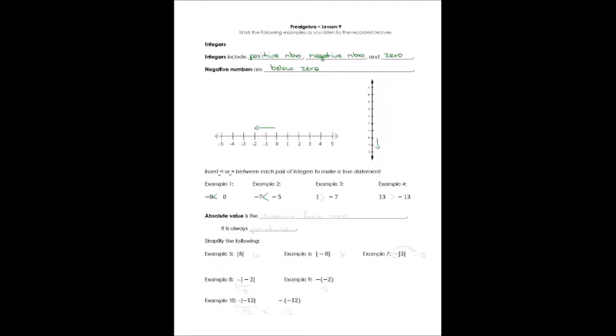Example three says one and negative seven. And of course, any positive number is bigger than any negative number. And example four tells us the same thing, 13, negative 13. Once again, any positive number is bigger than any negative number.